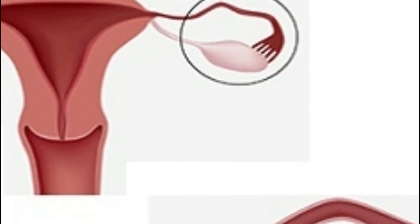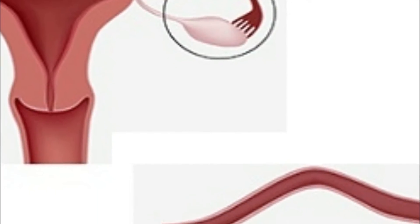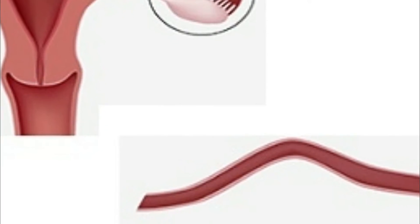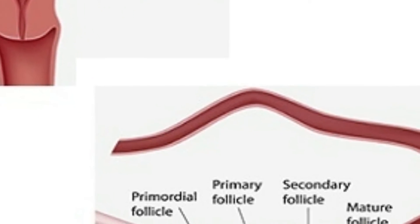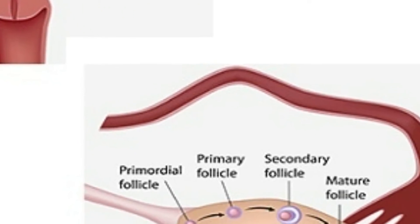Each ovary contains several thousands of immature follicles. A follicle is a ball of cells with the egg at the center.